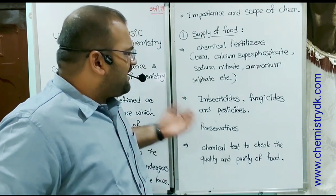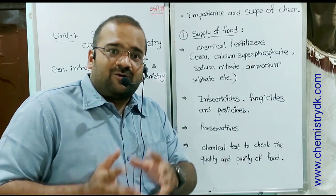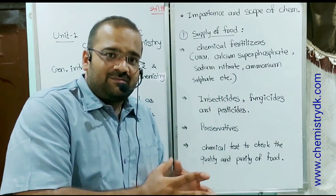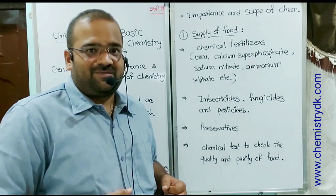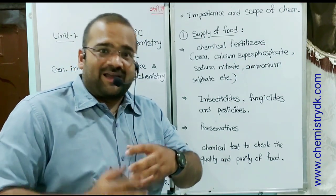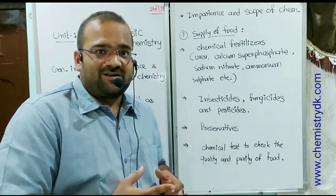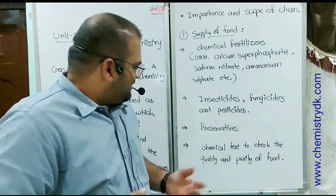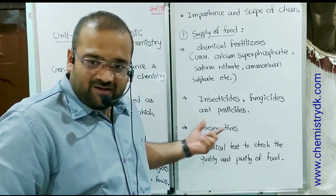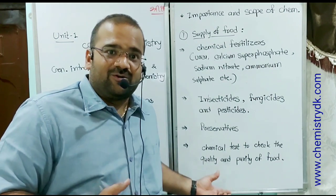Even we have to use insecticides, fungicides and pesticides to control the damage of crops by bacteria and insects. We are also using some preservatives for packet food like sauce, bread items, milk products etc. Chemical tests to check quality and purity of food, many chemicals are also used.